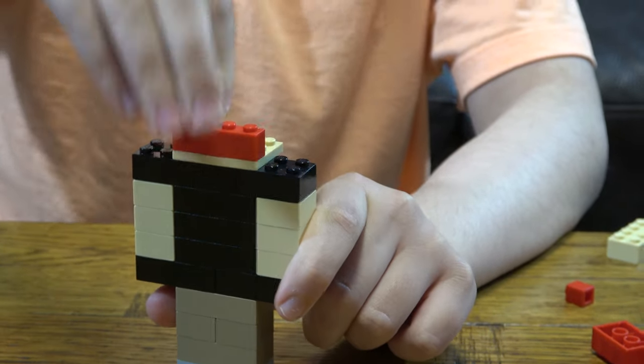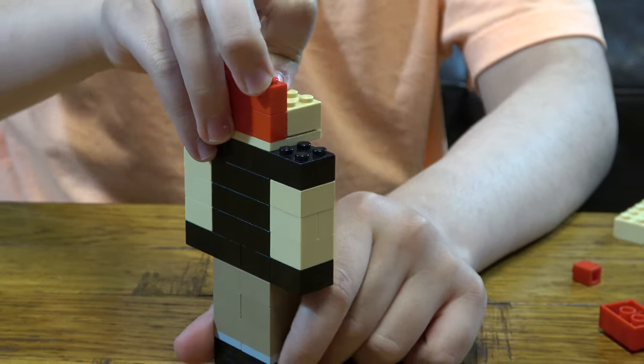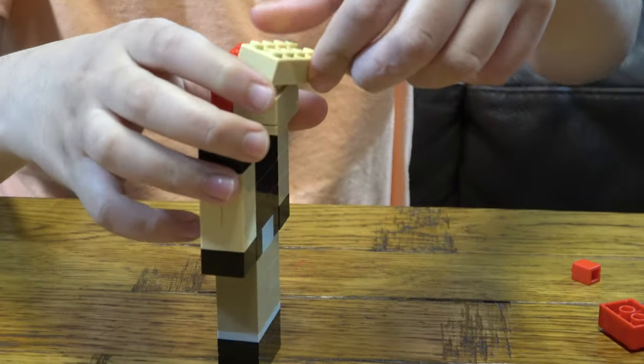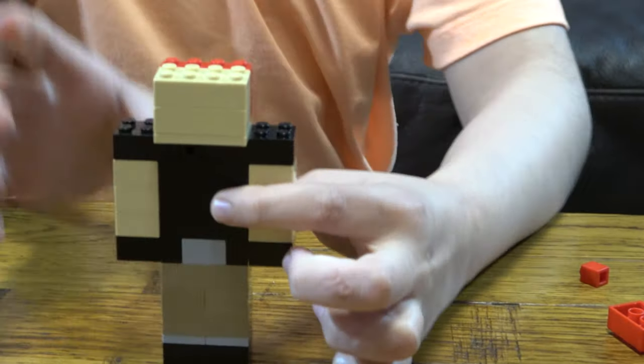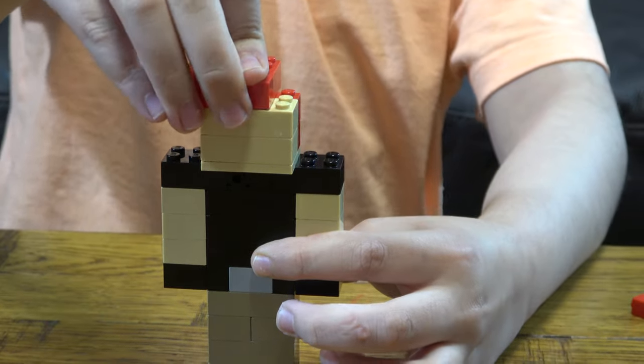Two of these reds like so. Two of these up front, like so. And then do this, place this here.